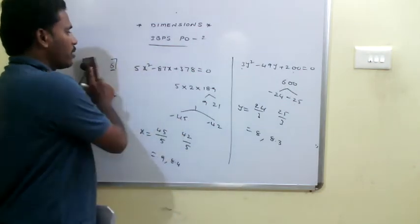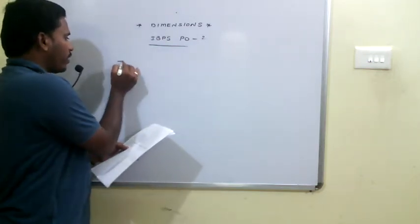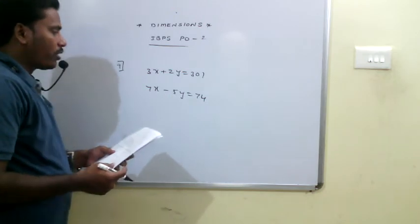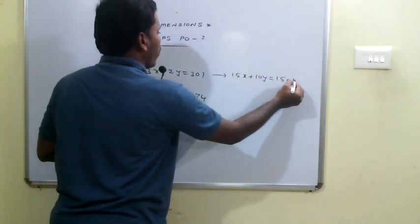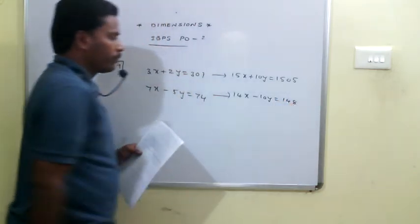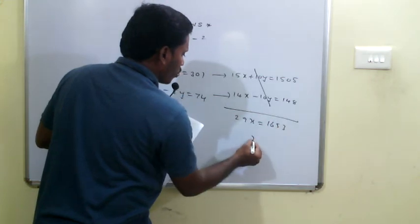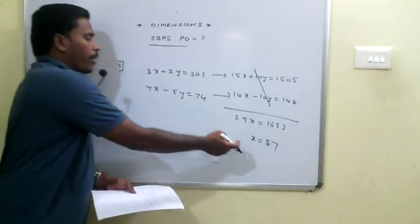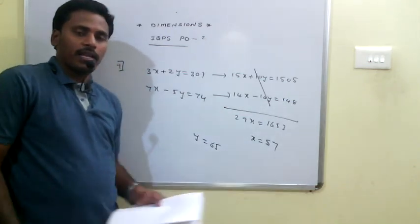Q9 involves linear equations. Given: 3x + 2y = 301 and 7x − 5y = 74. Multiply the first by 5: 15x + 10y = 1505. Multiply the second by 2: 14x − 10y = 148. Adding: 29x = 1653, so x = 57. Substituting x = 57 into the first equation gives y = 65. Since x = 57 < y = 65, x is less than y.